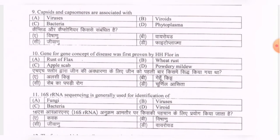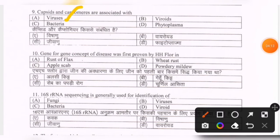Next question: capsids and capsomers are associated with — options are viruses, viroids, bacteria, phytoplasma. The correct option is the first one — viruses.